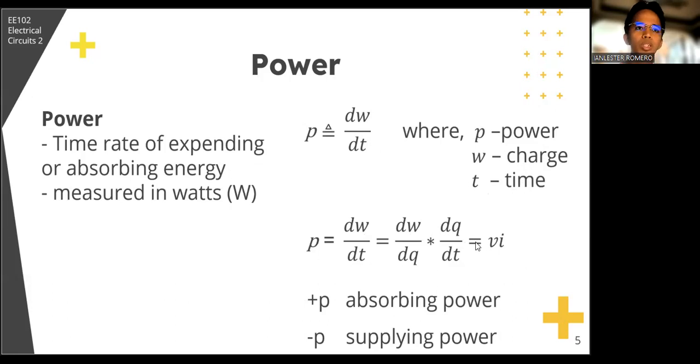As you may have remembered in the previous lecture, dw over dq is our voltage, and dq over dt is our current. Hence, p is also equal to vi. Thus, the power absorbed or supplied by an element is the product of the voltage across the element and the current through it.